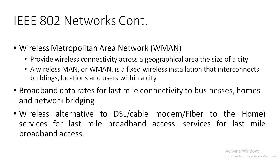Now let's study about wireless metropolitan area networks. As we studied earlier, the wireless local area network range is up to a building or campus, and a personal area network is around an individual device or person. A wireless metropolitan area network provides wireless connectivity around a geographical area the size of a city. A wireless MAN is a fixed wireless installation that interconnects building locations and users within a city, providing broadband access for last-mile connectivity to businesses, homes, and networks.